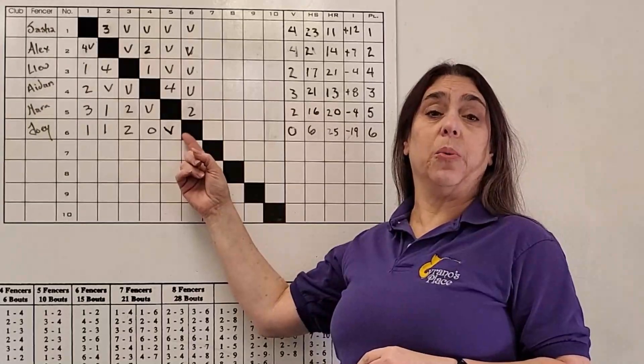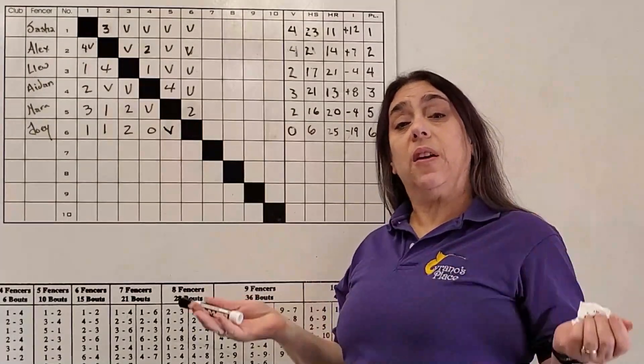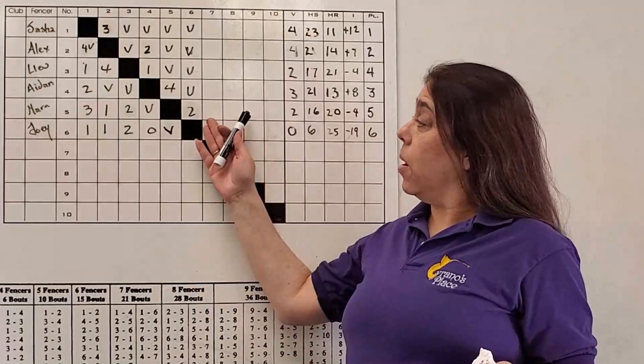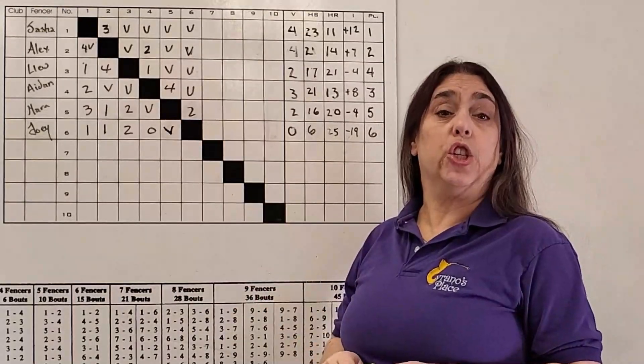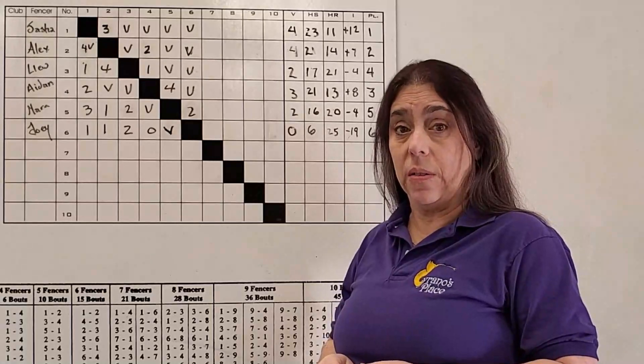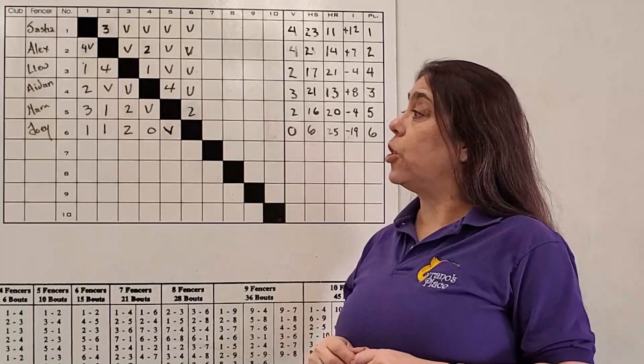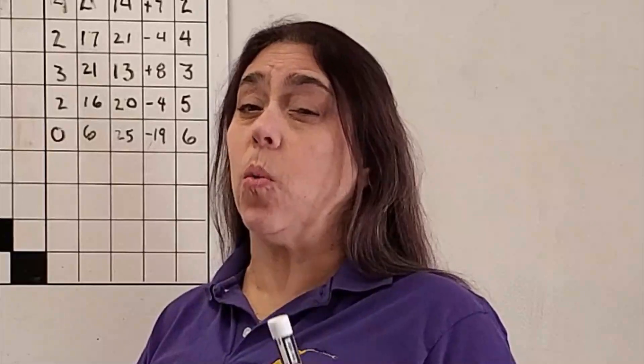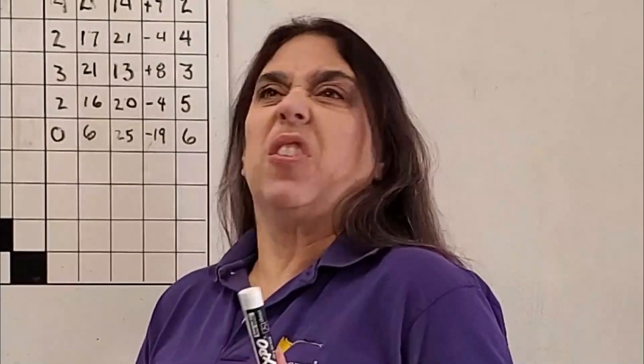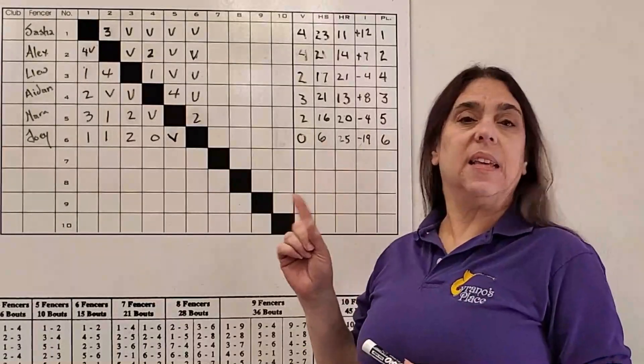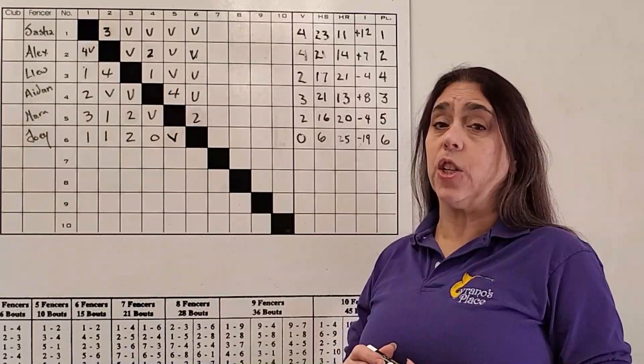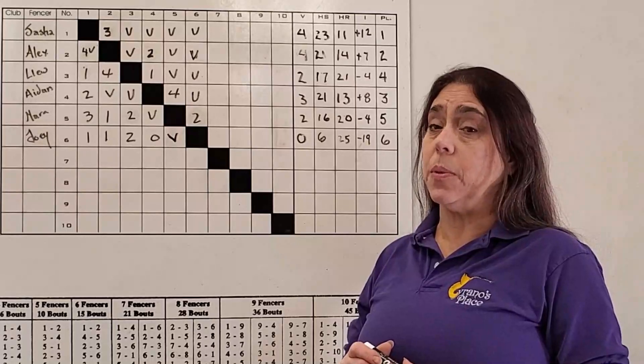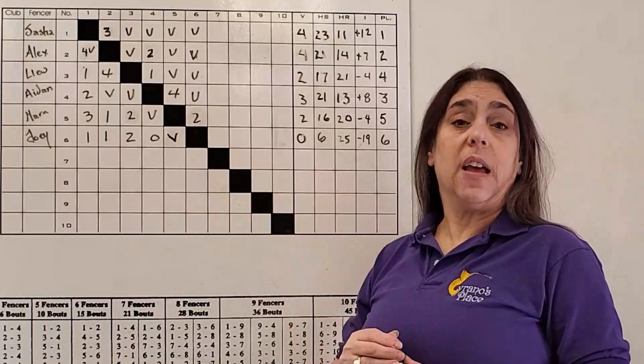At which point when Mara and Joey go to sign the sheet, they better not sign it until they identify that this score was written in wrong. Because if they don't, it's going to stay as is, and Mara who should have had that victory would be seated lower than she ought to based on her results. Check that score sheet. Every athlete, even if they're in a Y10 event and are seven years old, once they sign that score sheet, it's done. Parents can't sign for that child.